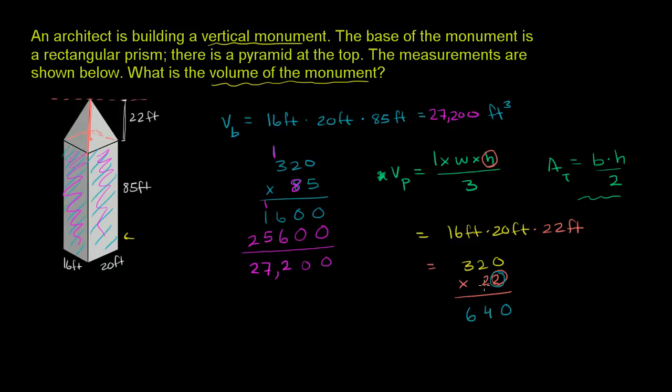Now I'll worry about this 2. Well, this is really 20, so we have to put a 0 here. 2 times 0 is 0. 2 times 2 is 4. 2 times 3 is 6. And we add them all up. 0, 4, you get a 10, bring out the 1, and 7,000.